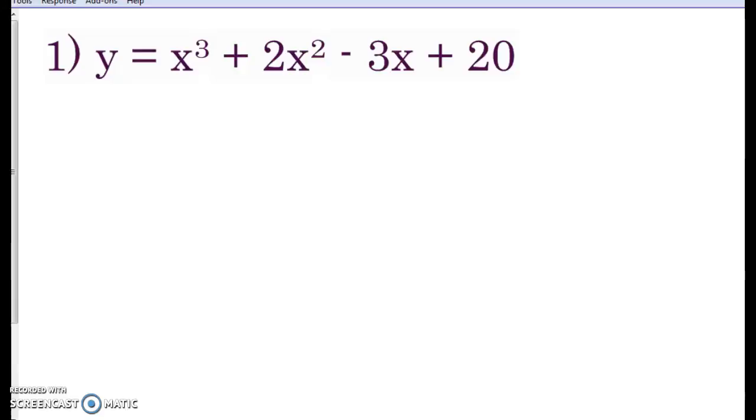Alright, so first thing we've got to do is list all of our possible factors. We've got 20, we're going to list all the factors of 20. We've got 1 times 20, 2 times 10, and 4 times 5.